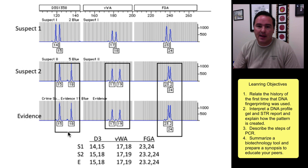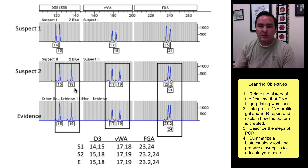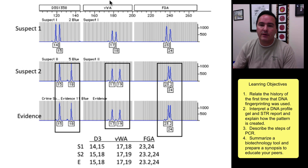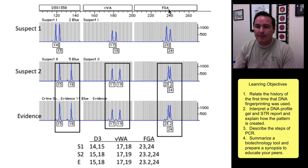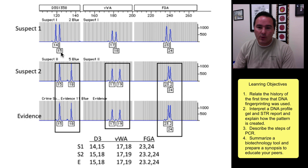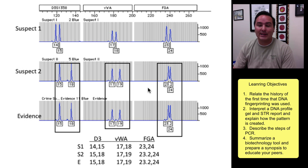Here's an example of this peak-based output. From the crime scene, there was a 15 and 18 peak for one marker, a 17 and 19 peak for another marker, and a 23.2 and 24 at the FGA marker. Suspect one had 14, 15, 17, 18, 23, and 24. Suspect two had 15, 18, 17, 19, 23.2, and 24 — an exact match.